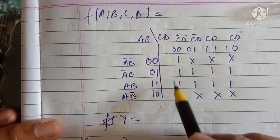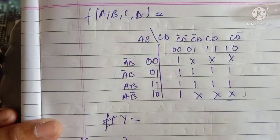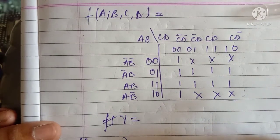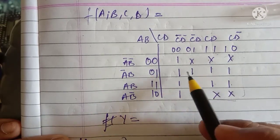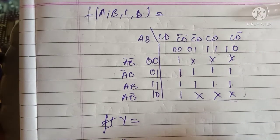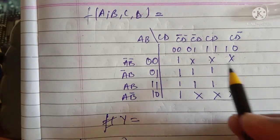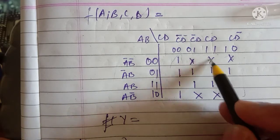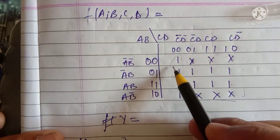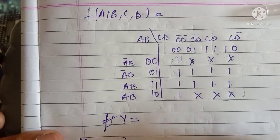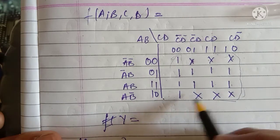Since this is a four-variable K-map, there will be 16 blocks. You need to make pairs — we count the ones: one two three four five six seven eight nine ten. You can't make a pair of ten, so you can make a pair of eight or sixteen. Now there is an X given, which is a don't-care. Don't-care means whenever it helps in forming the group you can take it, otherwise you can avoid it.